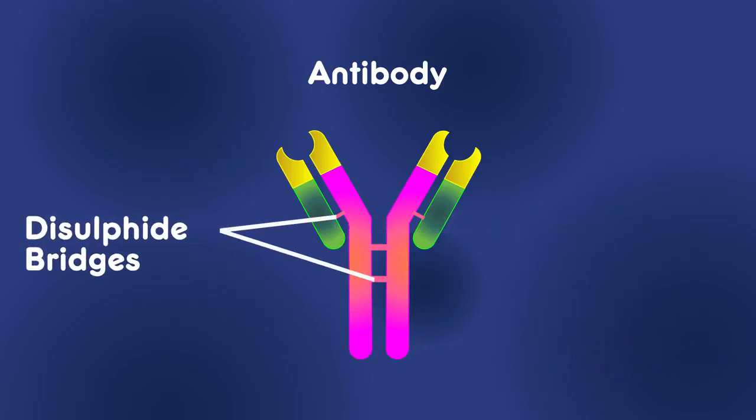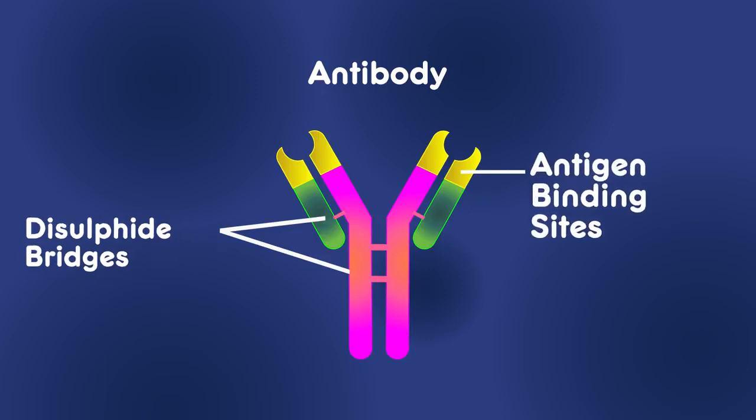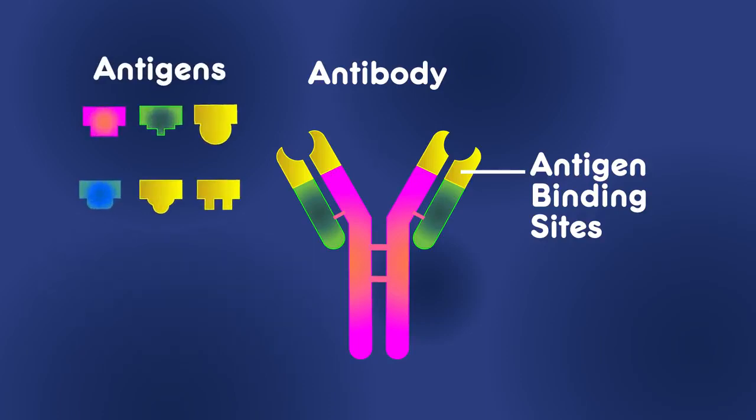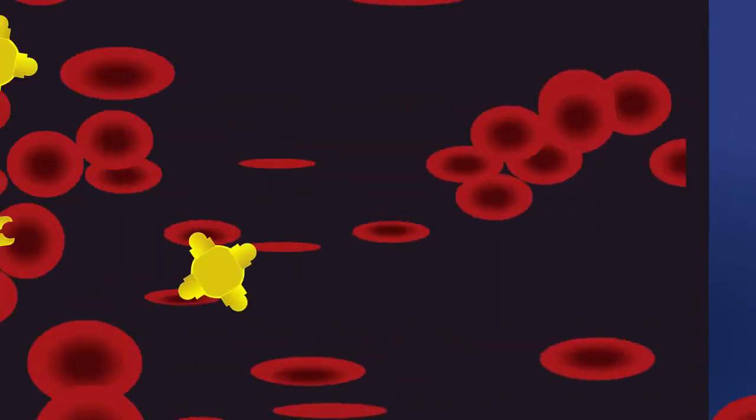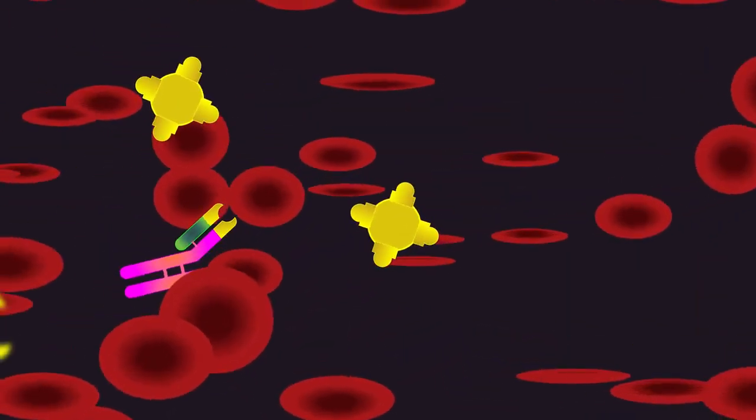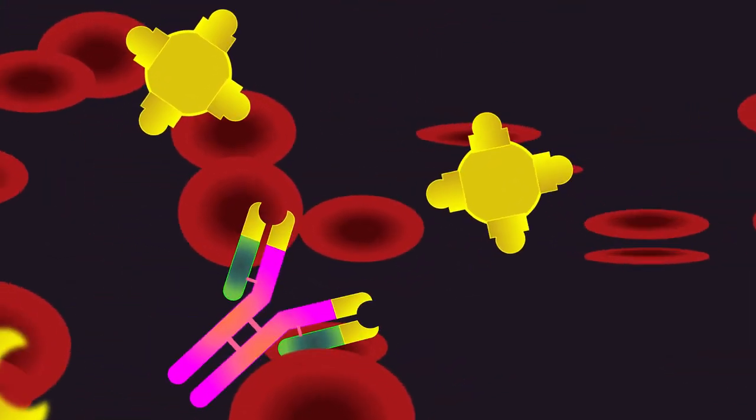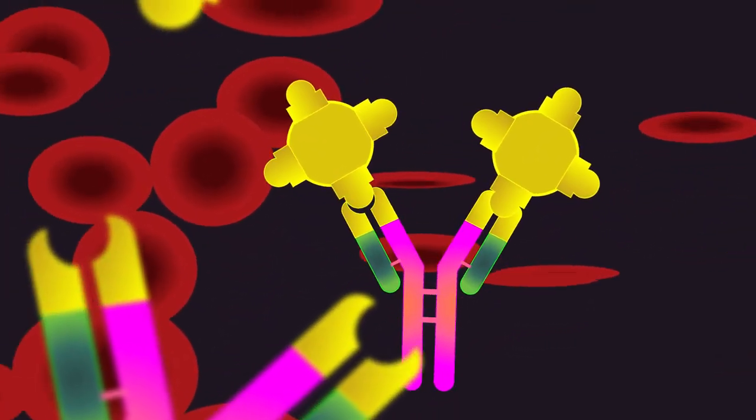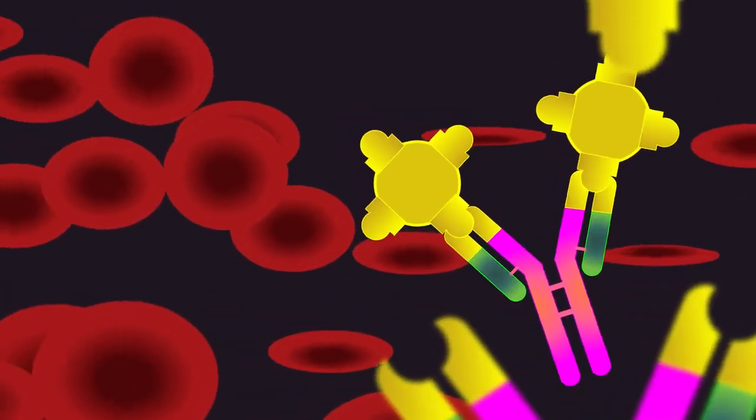At the tip of each arm are the antigen binding sites, crucial parts for attacking invading antigens. Similar to the lock-and-key mechanism in enzymes, the shape of the antigen binding site is specific to its target antigen. If part of the antigen fits into the binding site, the antibody recognizes and binds the foreign antigen, stopping it from causing more damage. Two identical binding sites mean any antibody can bind simultaneously to two identical antigens.